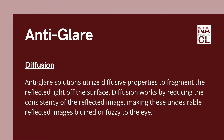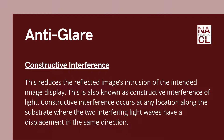Let's look at anti-glare coatings first. Anti-glare solutions utilize diffusive properties to fragment the reflected light off the surface. Diffusion works by reducing the consistency of the reflected image, making these undesirable reflected images blurry or fuzzy to the eye, which reduces their intrusion on the intended image display. This is also known as constructive interference of light, which occurs at any location along the substrate where the two interfering light waves have a displacement in the same direction.